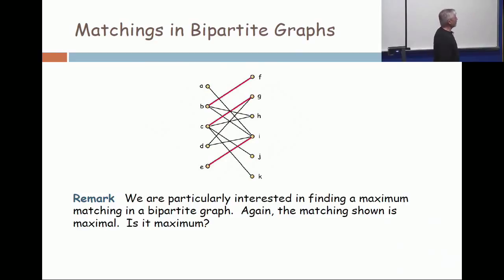Okay, so we're interested in finding maximum matchings in a bipartite graph. Now, I show a matching in this bipartite graph with those red edges. Can you add any edge to this matching? I don't think so. So that matching is maximal.